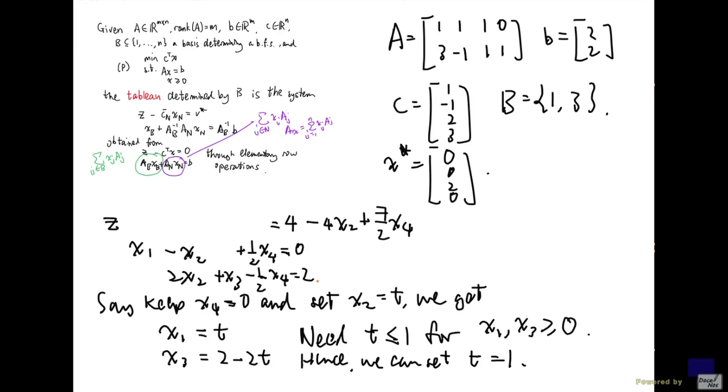And x_2 will be 1 as well. And when x_2 is 1 and x_1 is 1, my objective function value is 0. So, new basic feasible solution is 1, 1, 0, 0. And the objective function value of this is 0.